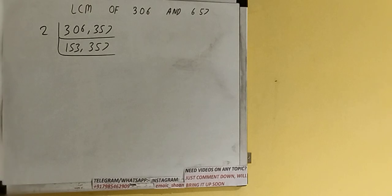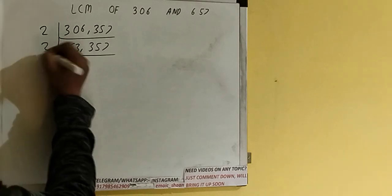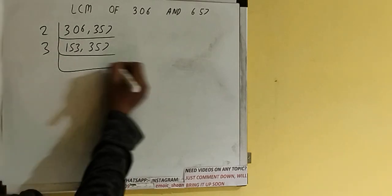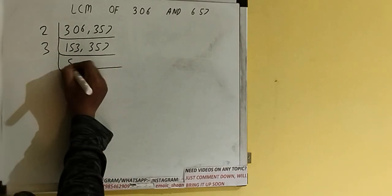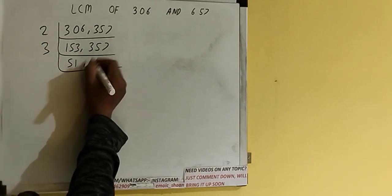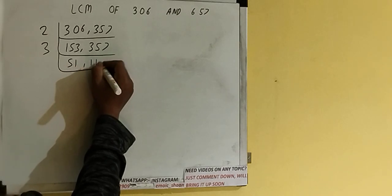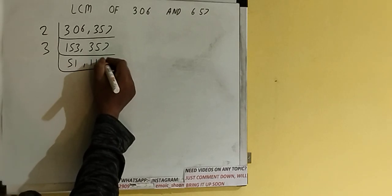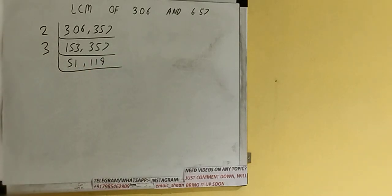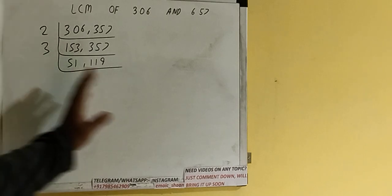Now, since neither number is divisible by 2 anymore, we check with the next lowest prime number, which is 3. Both numbers are divisible by 3, so we divide both by 3. This gives us 51 and 119.